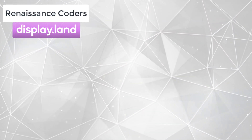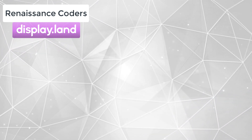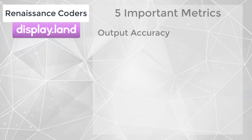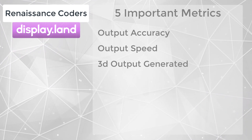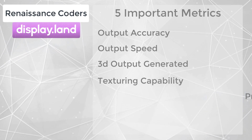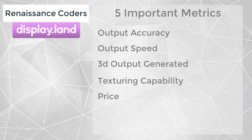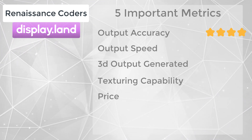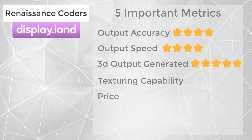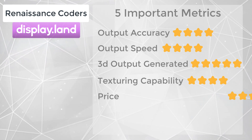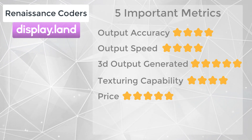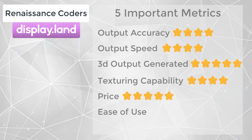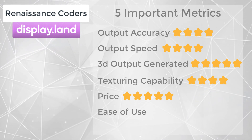Fast forward to right now and we're starting to see apps like DisplayLand blow everybody away. When it comes to 3D scanning there are generally five metrics that you should care about: output accuracy, speed to generate the output, whether this is true 3D output, texturing capability, and price. What Ubiquiti 6 has done with DisplayLand is remarkable because they hit all five fairly well. I'd rate DisplayLand at about four stars in accuracy, four stars in speed, five stars in 3D output, four stars in texturing, and five stars on price since all we need is the phone we use every day. Additionally, ease of use — a metric not previously considered — can now be introduced, and I'd give DisplayLand four stars there as well.